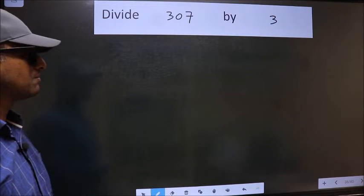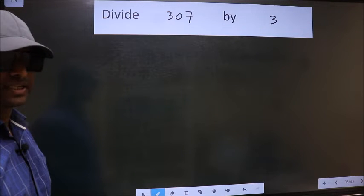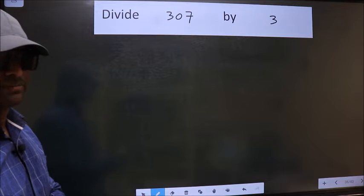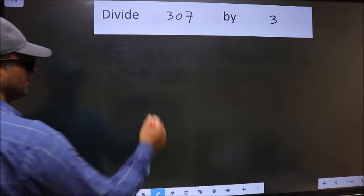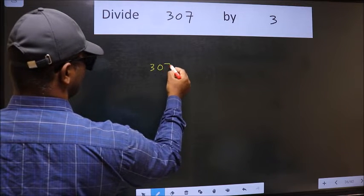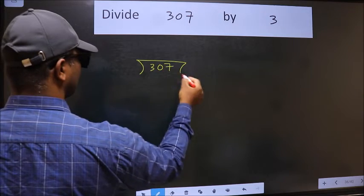Divide 307 by 3. To do this division, we should frame it in this way. 307 and 3 here.